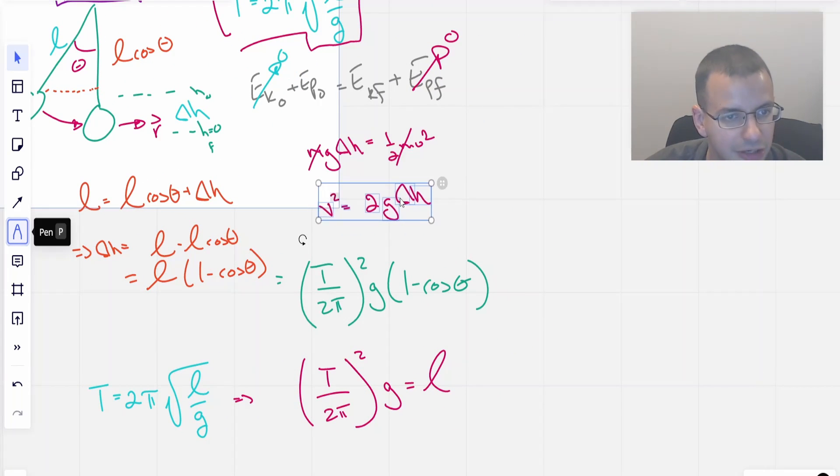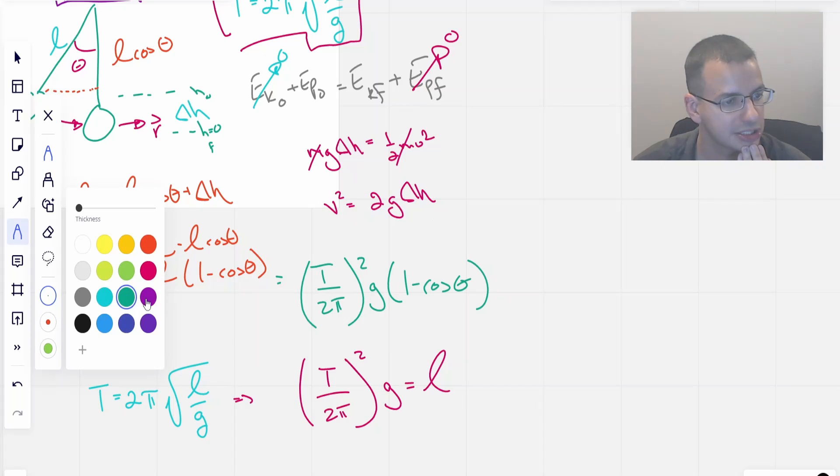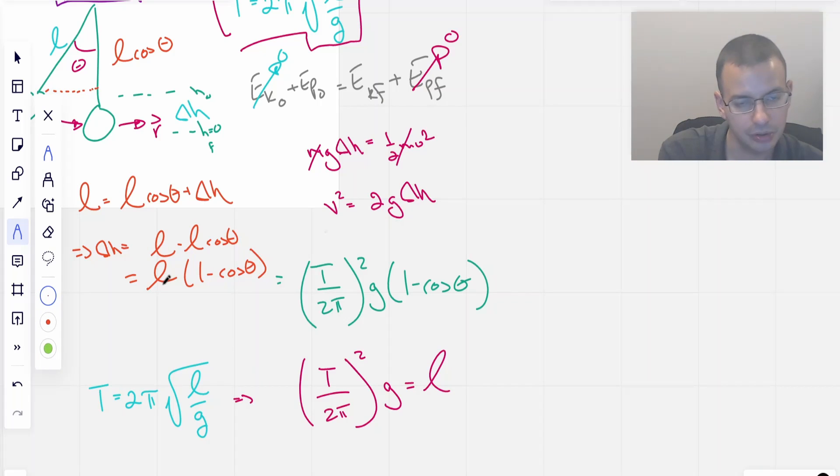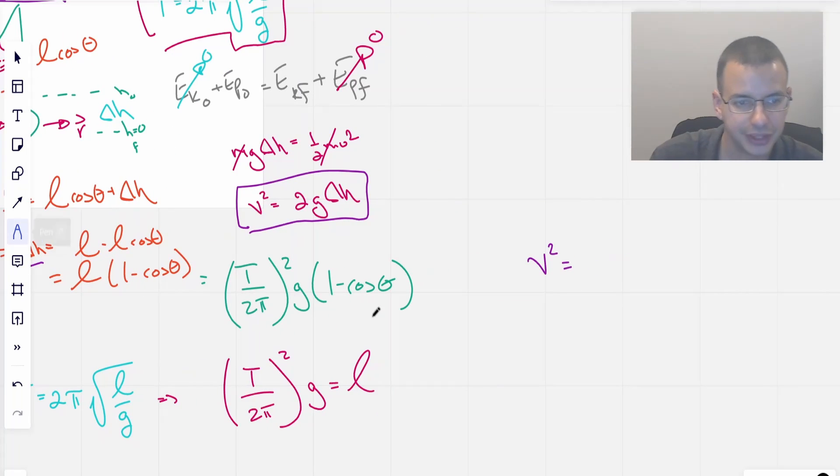So now, despite the messiness, hopefully you're not graded on how clean your work is because my work is not clean at all. Now we're going to go back up to this equation. So this is delta H. Delta H is this.